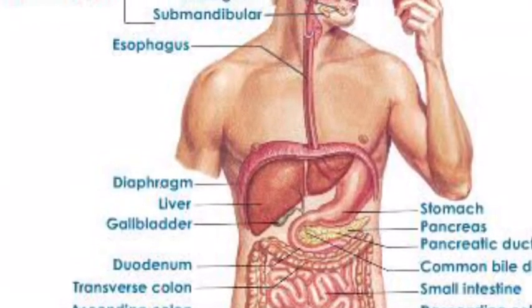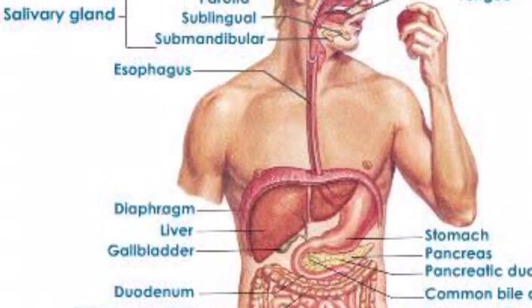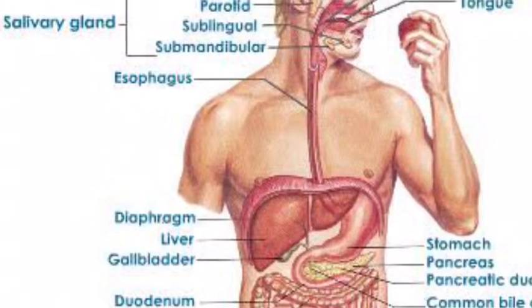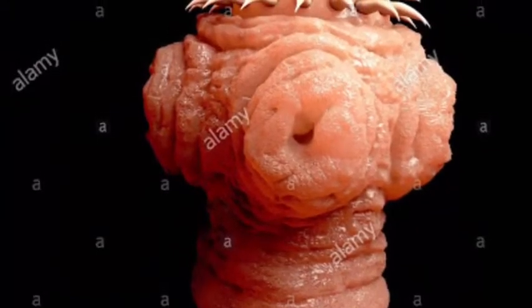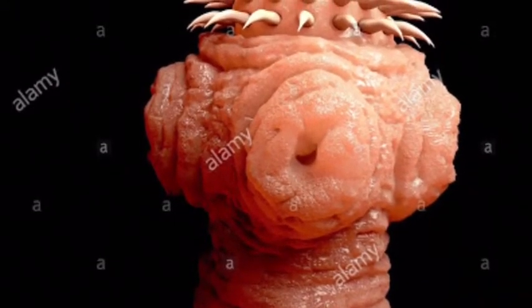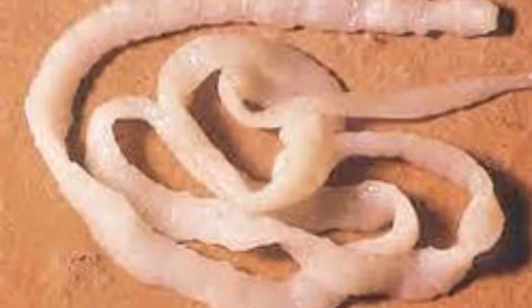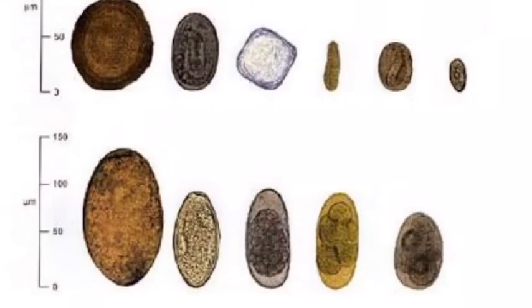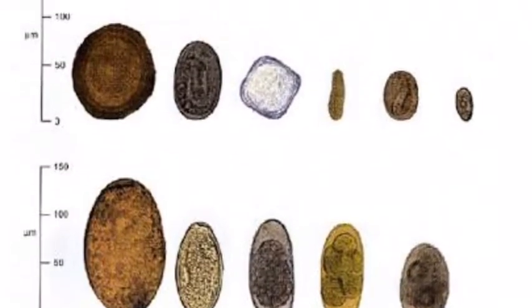Fifth, humans acquire the infection by ingesting raw or undercooked meat from the infected animal host. The scolex then attaches to the intestine, and sixth, the adults pass through the small intestine. They then lay their eggs and the cycle continues.